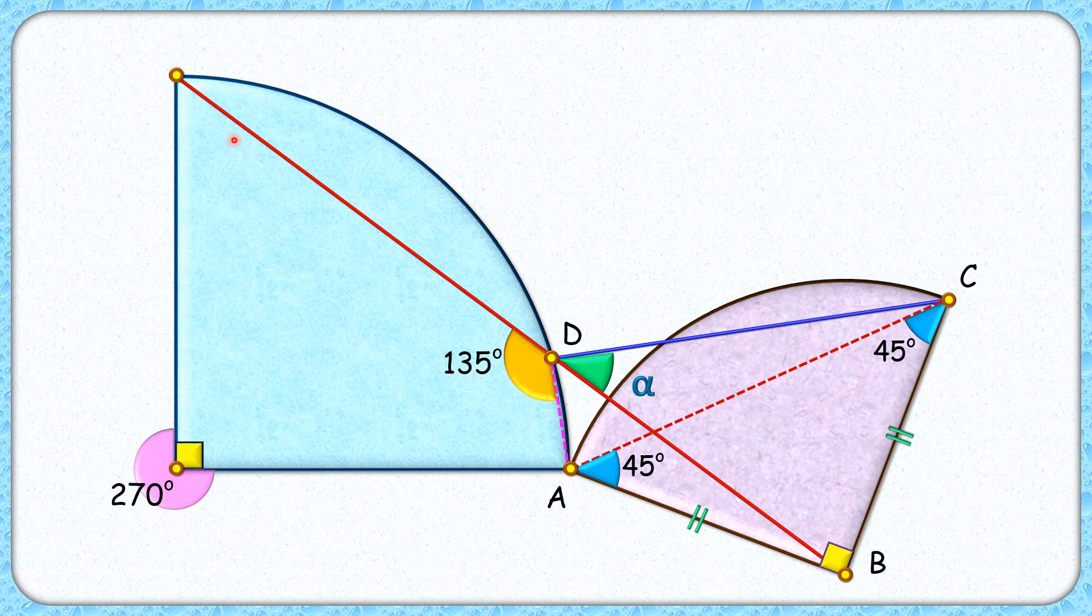Now this red line segment is a straight line, and thus this remaining angle here will be 45 degrees. Now here comes the magic: if we consider this line segment AB, it's subtending an angle of 45 degrees at point C and 45 degrees at point D.